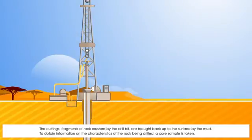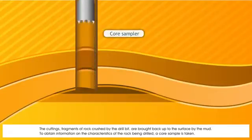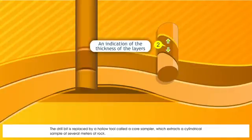The cuttings, fragments of rock crushed by the drill bit, are brought back up to the surface by the mud. To obtain information on the characteristics of the rock being drilled, a core sample is taken. The drill bit is replaced by a hollow tool called a core sampler, which extracts a cylindrical sample of several meters of rock.